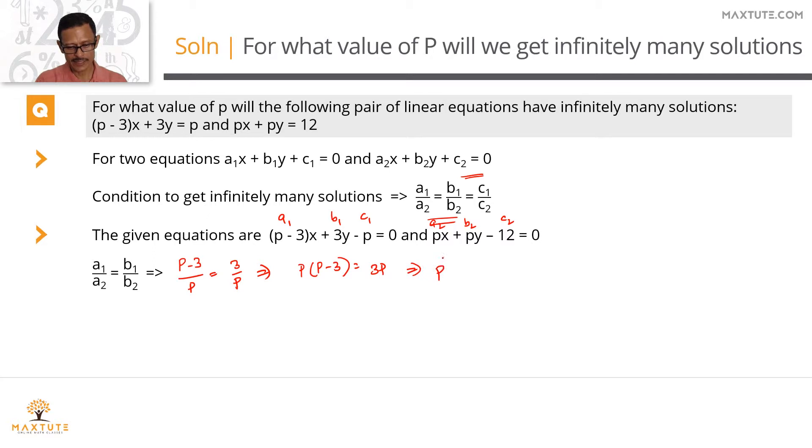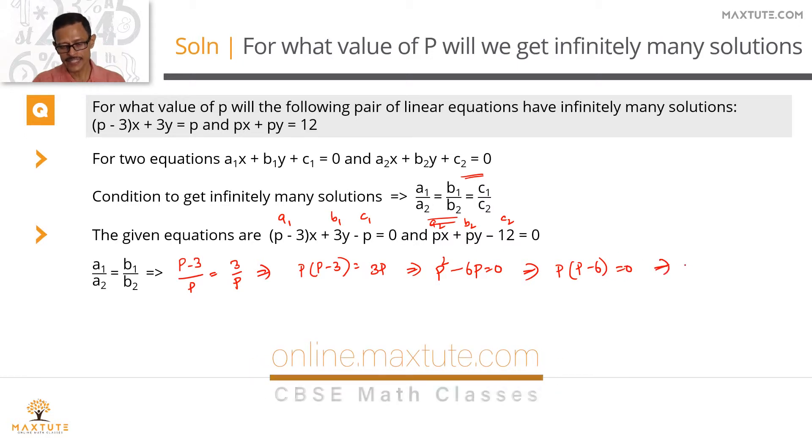Take the 3p from the right hand side. So it's going to become p square minus 6p equals 0. Take p as a common term outside. So we'll get p into p minus 6 equals 0. So what values can p take? p can either be 6 or p can be 0.